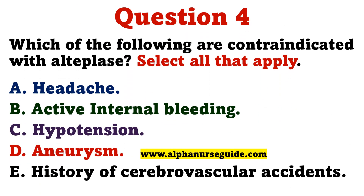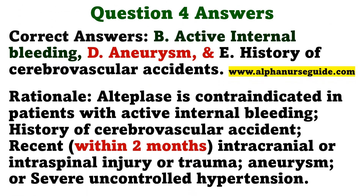Practice question: Which of the following are contraindicated with Alteplase? Select all that apply. The correct answers are B — active internal bleeding, D — aneurysm, and E — history of cerebrovascular accidents. Alteplase is contraindicated in patients with active internal bleeding, history of cerebrovascular accident, recent intracranial or intraspinal injury or trauma, aneurysm, or severe uncontrolled hypertension.